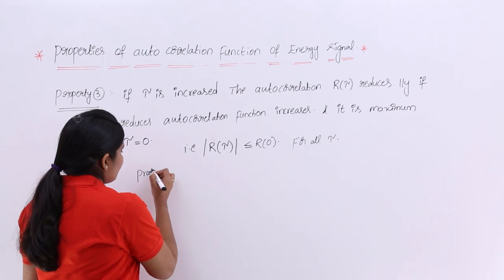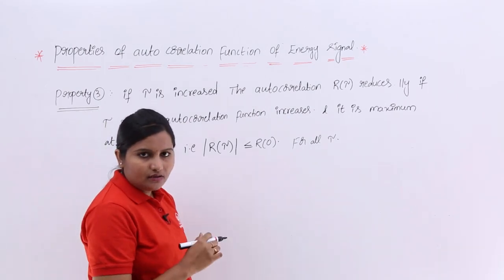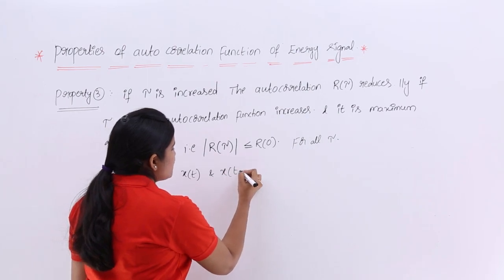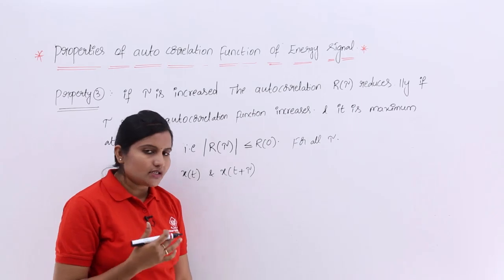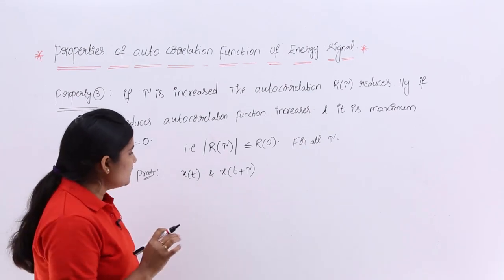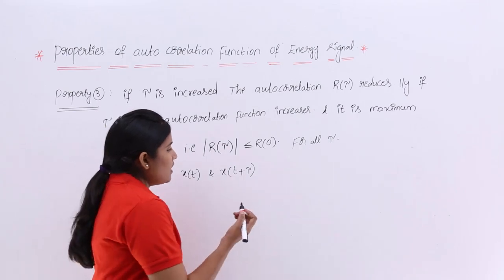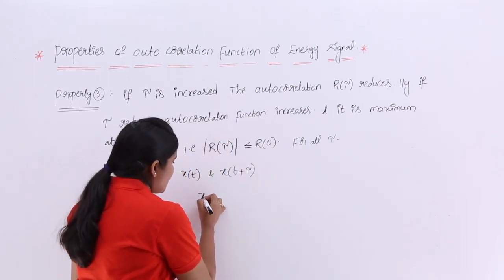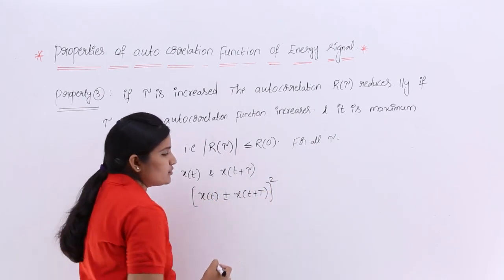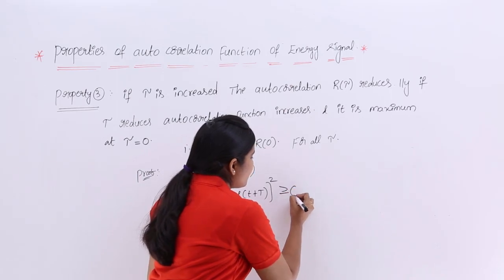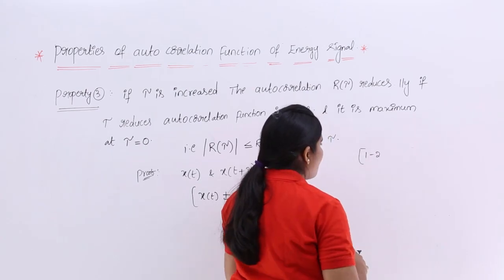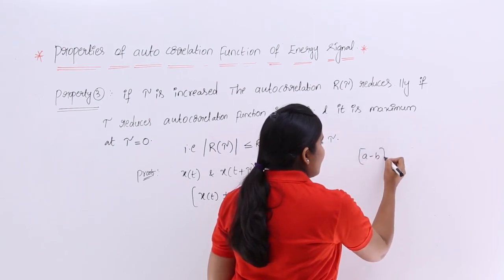Now I want to prove this property. To do so, I consider two signals: x(t) and x(t + tau). I look at the expression [x(t) - x(t + tau)] squared, which is always greater than or equal to 0. This is because squaring any real quantity — whether positive, negative, or zero — always yields a non-negative result.